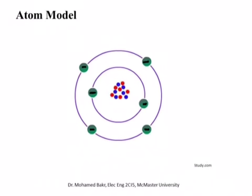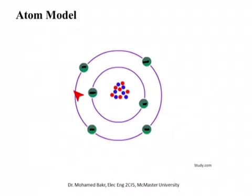The first thing when we talk about current and voltage is to understand what is meant by current. To understand this we have to go back to the atom model — the Bohr atom model. In this model we have valence electrons in the outermost shell, and protons and neutrons in the nucleus. Depending on how strongly attached these valence electrons are to the nucleus, the electrons in the outermost shell can move and conduct current.